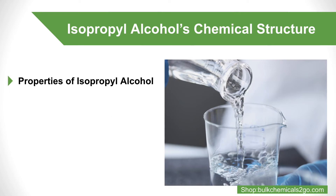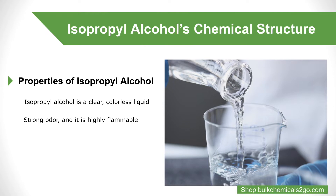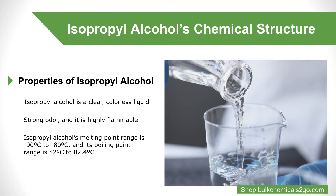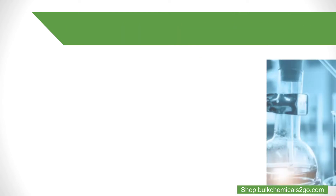Properties of isopropyl alcohol: it is a clear, colorless liquid with a strong odor and is highly flammable. Its melting point range is negative 90 degrees Celsius to negative 80 degrees Celsius, and its boiling point range is 82 degrees Celsius to 82.4 degrees Celsius.